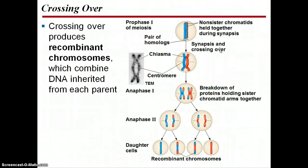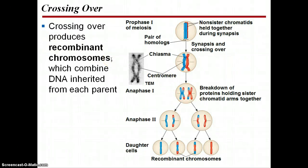Crossing over can also produce more genetic variation. When homologous pairs are in synapsis, crossing over takes place at the chiasmata, allowing chromosomes to swap DNA between the maternal and paternal chromosomes. This creates recombinant chromosomes that are completely different from the initial chromosomes that went into meiosis. You can get all these different variations of chromosomes that carry different genes than the parents had — a really interesting way to add in more variation.